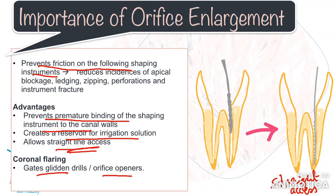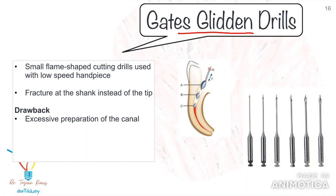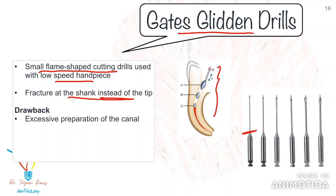The function of these instruments is to enlarge the orifice 3-4 mm into the canal. If you try to take the instruments to the working length, they can fracture or lead to over-preparation. Gates Glidden drills are small flame-shaped cutting drills used with a low-speed handpiece. They come in different sizes and are not very flexible, so there is a tendency to perforate the canal if placed too deep. The advantage is that if a Gates Glidden drill breaks, it will fracture at the shank instead of the tip, so you can easily retrieve it with a tweezer. It can be used at a speed of 500-750 rpm in a brushing motion with a light touch. Start with a smaller size first depending on your canal diameter and sequentially increase sizes to achieve the desired taper. The drawback is that there are chances of excessive preparation of the canal wall, making it weaker, especially when preparing curved canals.